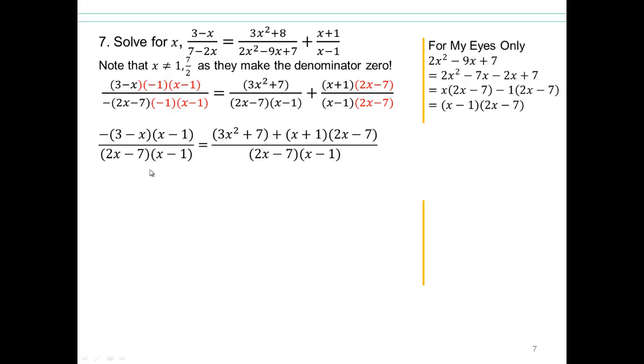All right. So now we have 2 fractions equaling each other because they have the same denominators. The only way they're going to be equal to each other is if the numerators are equal to each other, which is that. So now you know what to do. Multiply it out. So negative times 3 is negative 3. Negative times negative x is positive x times x minus 1. And then here we have this.